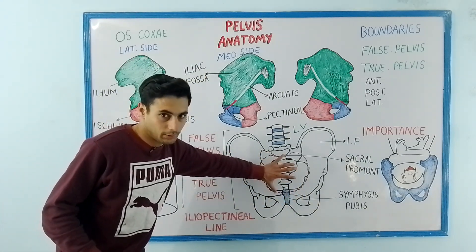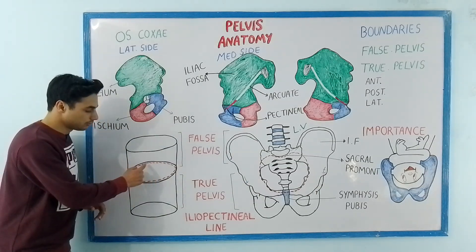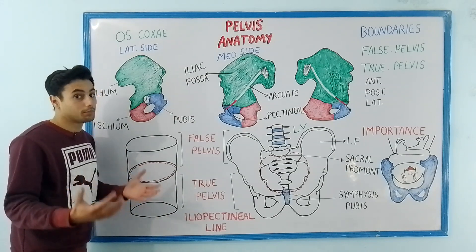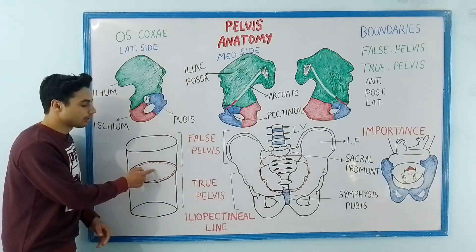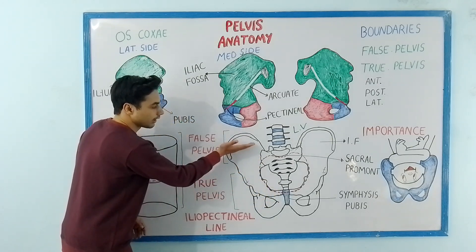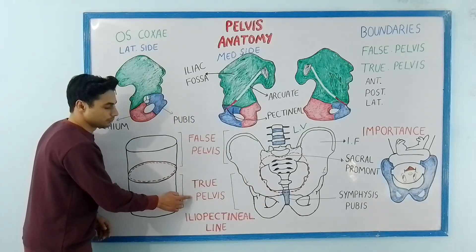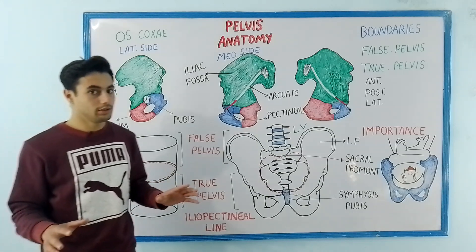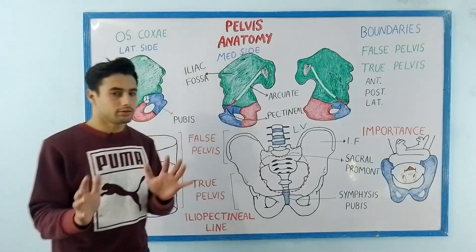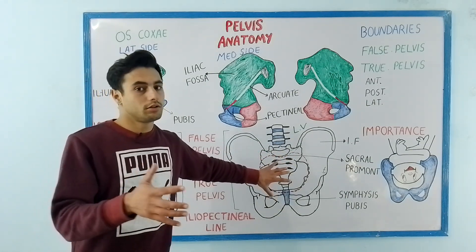Let's compare the whole pelvis with a cylindrical structure to understand it more clearly. This red dotted line represents the iliopectineal line of the two hip bones, which forms the pelvic brim or pelvic inlet. Above the pelvic inlet we have the false pelvis, and below the pelvic inlet or pelvic brim we have the true pelvis. The false pelvis is also known as the greater pelvis, and the true pelvis is also known as the lesser pelvis.